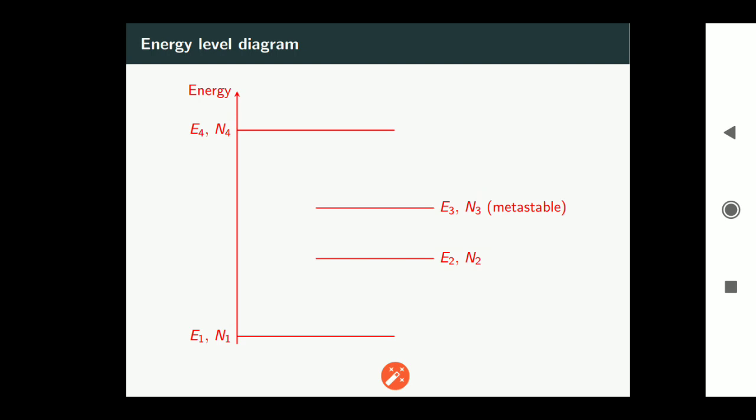So when pumping mechanism turned on with pumping transition probability Wp, then that radiation can make induced transition both upward as well as downward. Now those atoms which are at the upper level e4 can make a quick transition to e3 by a non-radiative fast transition.